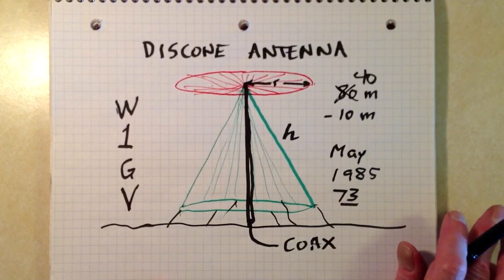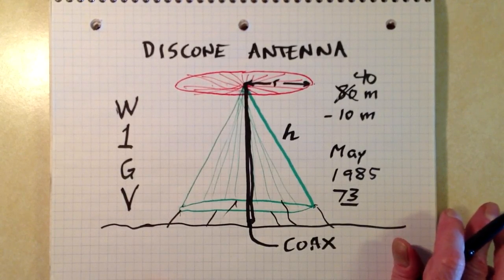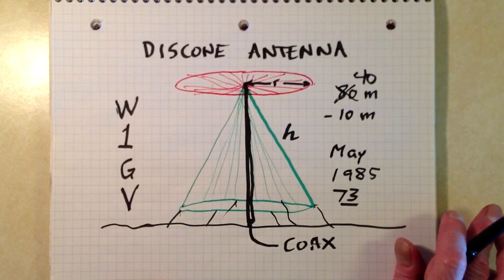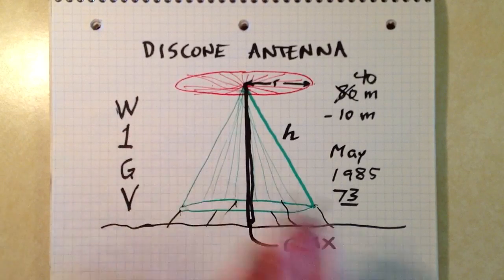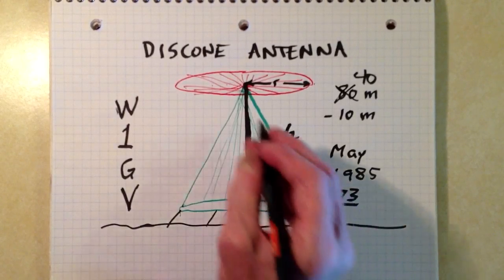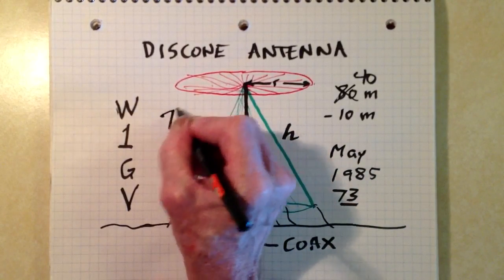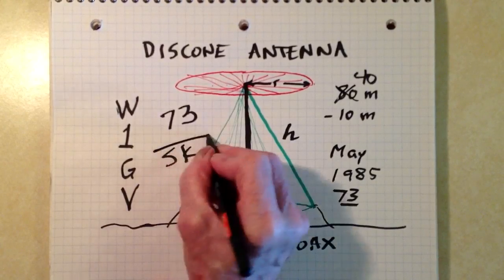So that is the disc cone. Again, I will provide a link to that article that I wrote in the May 1985 issue of 73 magazine in the description of this video. Stan Gibalisco W1GV, Whiskey 1 Good Vibrations. Signing off for now, saying 73, just like the magazine, and so long.